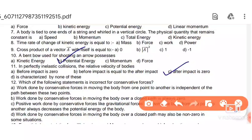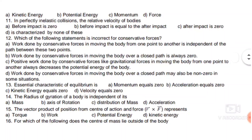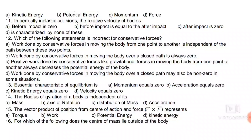Next: which statement is incorrect for conservative forces? Statement one: work done by a conservative force moving a body from one point to another is independent of the path — this is correct. Statement two: work done by a conservative force over a closed path is zero — this is correct.